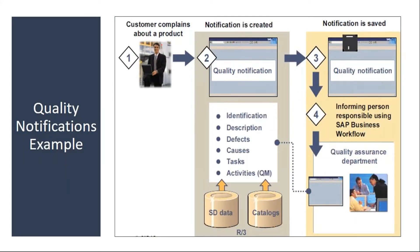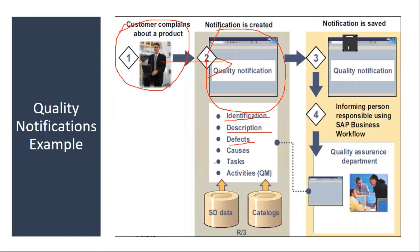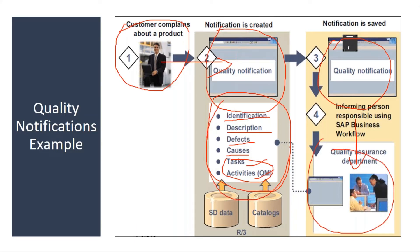For example, let's say a customer complains about a product. You receive the complaint and create a notification. In the notification, you enter the identification details: what is the material, what is the plant, what is the batch number. You describe the problem, what is the defect, what is the cause for this defect, and what tasks and activities you are going to do. All these are entered and the notification is saved. The Quality Assurance Department will coordinate and enter all this information in the notification.